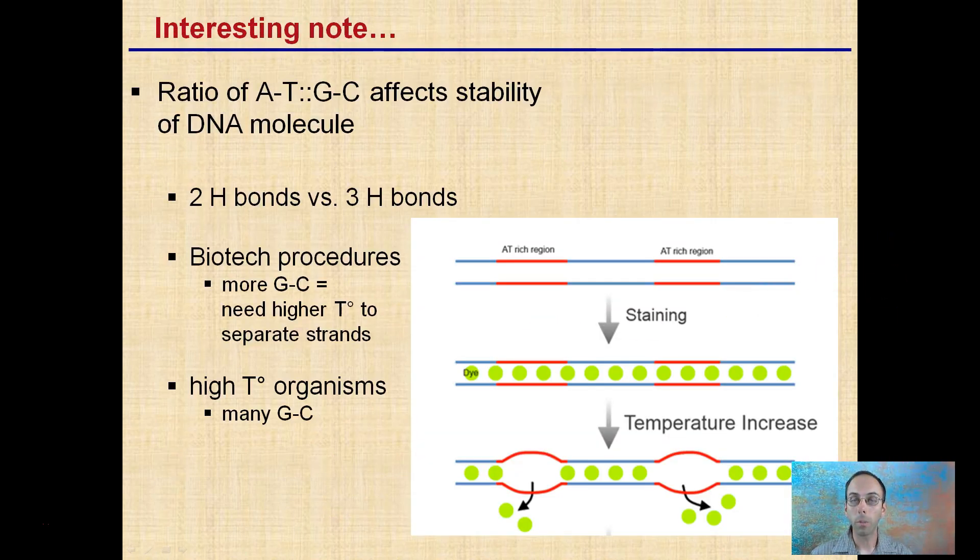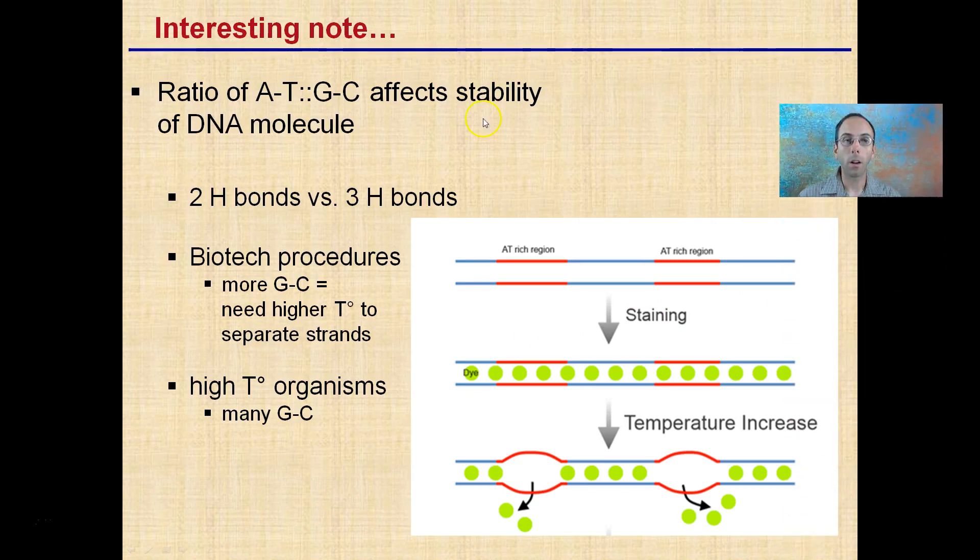An interesting note is that the ratio of A to T and G to C affects the stability of the DNA molecule, as I mentioned. Two bonds versus three bonds. A to T has two bonds, G to C has three bonds.